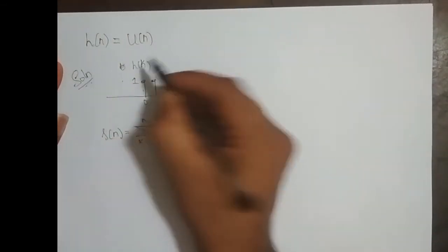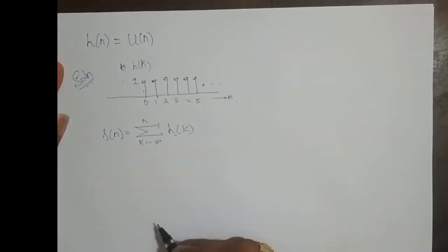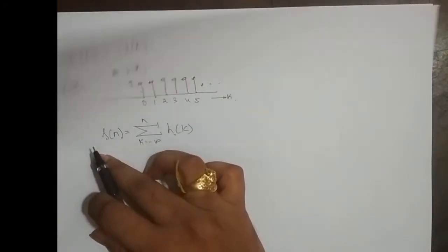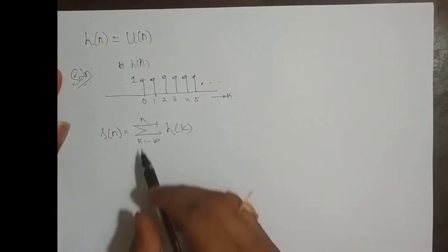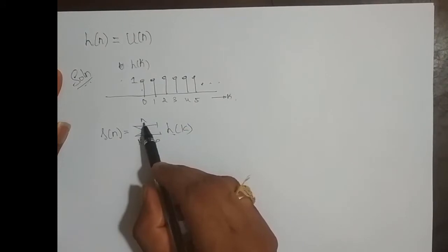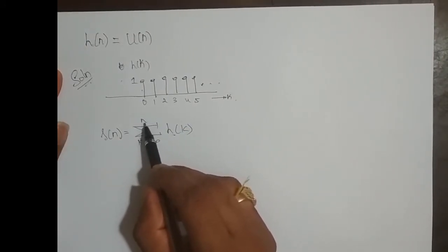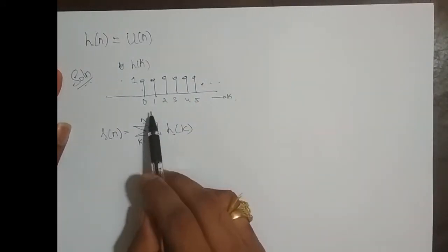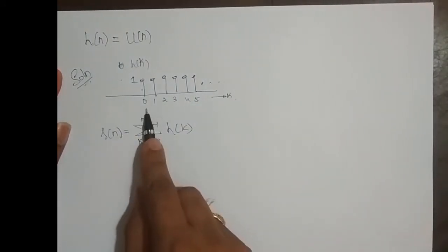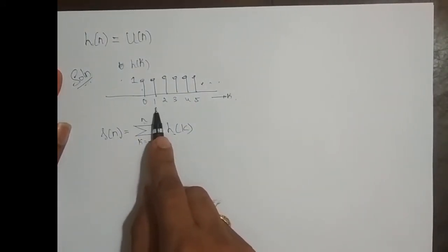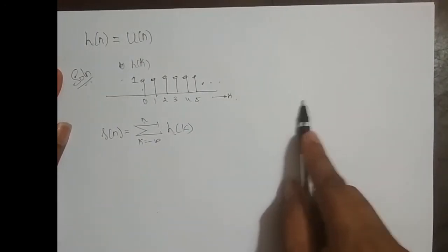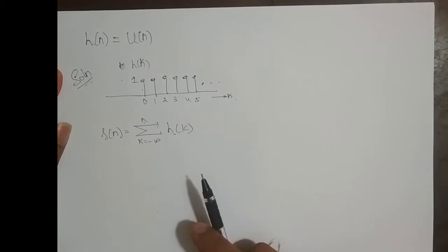How do we do that? Just replace n by k. Now, what is this n? This n is a slider. I can give any value to this n depending upon the impulse response. I can give n the value 0, 1, 2, 3, 4, 100, or up to infinity.